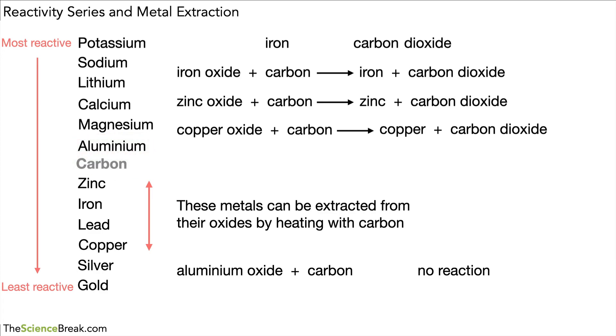One more example, we can take a look at magnesium oxide and carbon and again you can see the magnesium is above carbon in the reactivity series. So again there's going to be no reaction because the magnesium is more reactive than carbon. We cannot extract magnesium from its oxide using this method. Those two metals we have to use a different method to extract them.